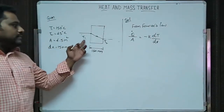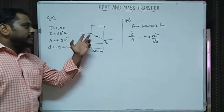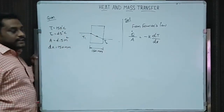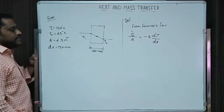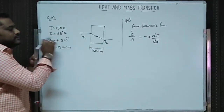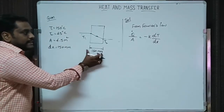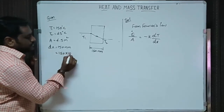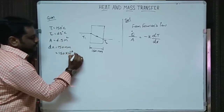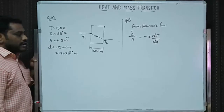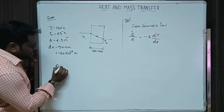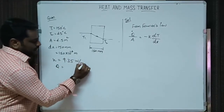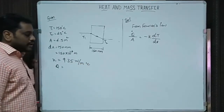In the second problem, it is again a plate through which heat flow happens. T1 = 150°C and T2 = 45°C. The area given is 4.5 m². The thickness dx = 150 mm = 150 × 10⁻³ meters. The thermal conductivity k = 9.35 W/m·°C. You are asked to find out the value of Q, that is the heat flow.